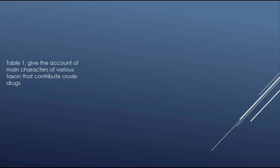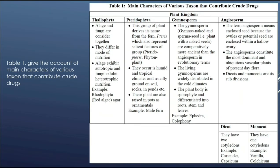In the table, we will discuss about the main characters of various taxons that contribute to drugs. The first group is thalophyta, which contains algae and fungi together, and they differ in mode of nutrition. Algae make their own food as they contain chlorophyll, but fungi cannot make their own food — they are dependent on other organisms. Algae exhibit autotrophic mode of nutrition and fungi exhibit heterotrophic mode of nutrition. For example, rhodophyta means red algae, and agar.